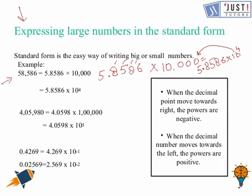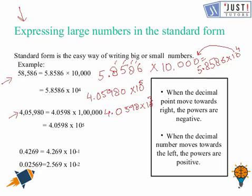For another example, if it is four lakh five thousand nine hundred and eighty, we can write it as 4.05980 times ten to the power five. Counting the digits: one, two, three, four, five — so it is five. We can write it as 4.0598 times ten to the power five.